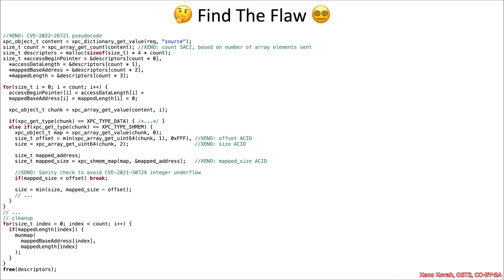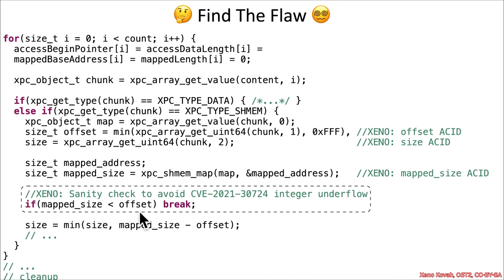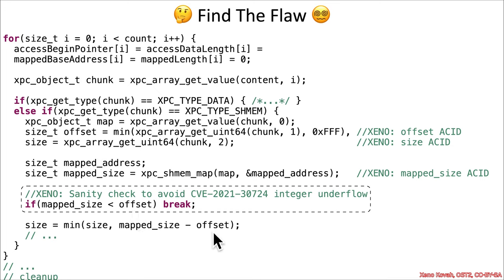Apple patched that vulnerability, and if we zoom in on the fix, we can see that they added a sanity check to make sure that the mapped size is not less than offset. These are all size_t's, and therefore they're unsigned maximum size, whether it's 32 or 64-bit. So check for the unsigned — is this less than that, and if so, break out instead of falling into this acid math trap.